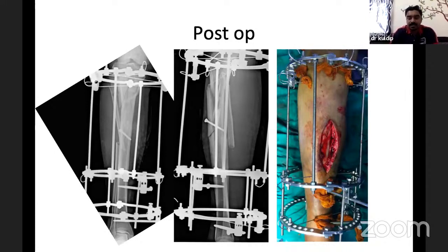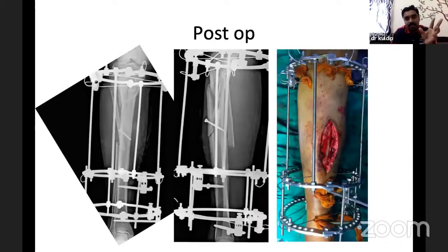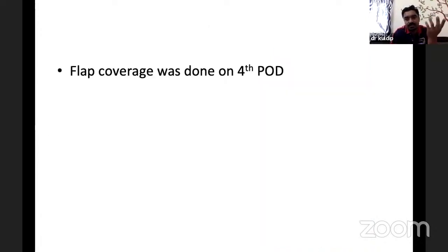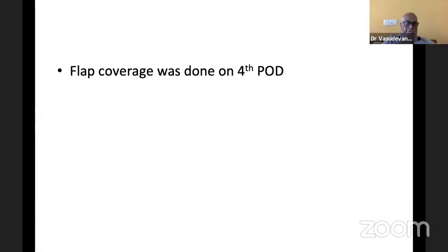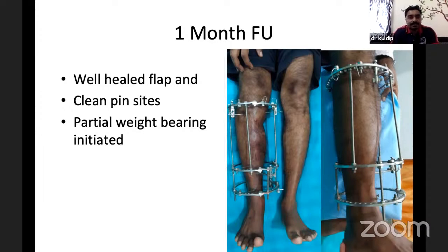The plastic surgeons came after the fourth post-op day. It was an open injury, road traffic accident, maybe some infection, so we waited a few days. They covered with a flap on the fourth post-operative day. At one month, clinically it looked good — clean pin sites, the flap was well-healed — so we started partial weight bearing. At four months it looked okay, so we made him more weight bearing and continued.